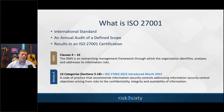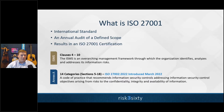ISO 27001 is broken into two main parts. The first is clauses four through ten. A lot of the ISO management systems follow the same structure — you'll see those same clause headers in many different management system standards that ISO has published. It's really interesting that they've honed in on the six elements it takes to stand up a management system of any kind.